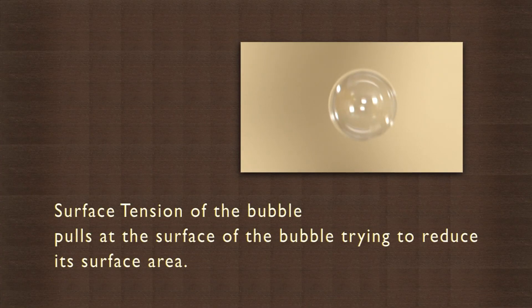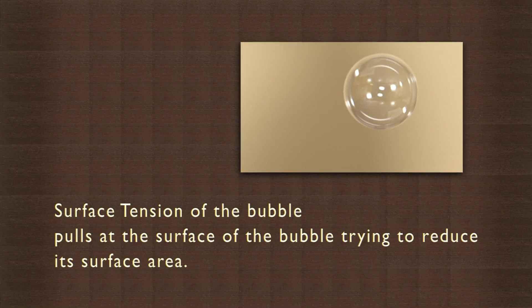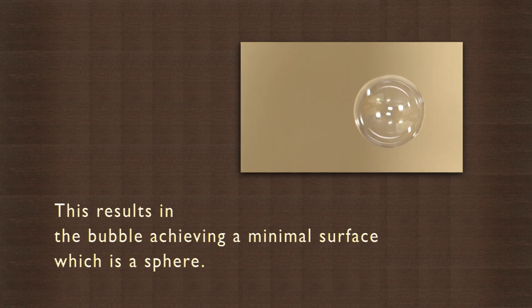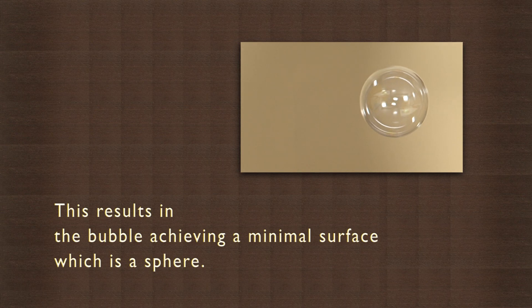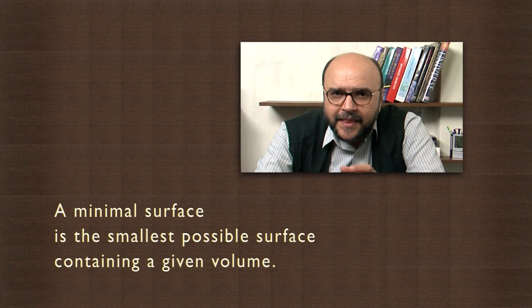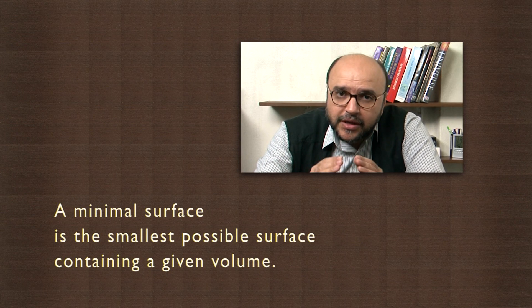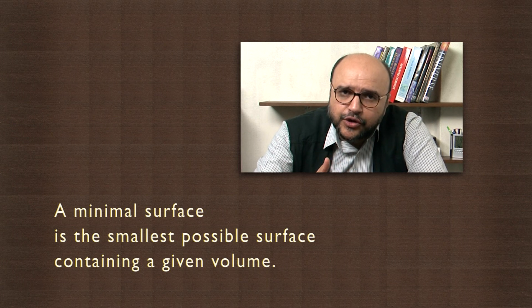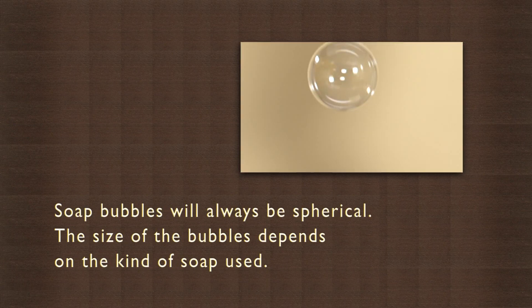Why does this happen? The surface tension of the bubble pulls at the surface of the bubble, trying to reduce the surface area. This results in the bubble achieving a minimal surface, which is a sphere. A minimal surface is the smallest possible surface containing a given volume. So soap bubbles will always be spherical.